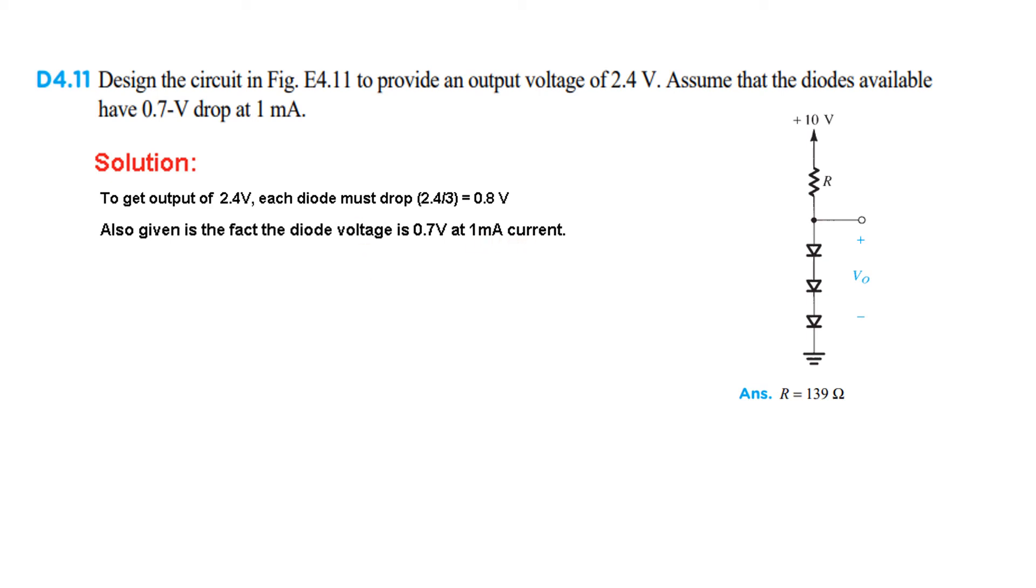The circuit requirement is that the diode has 0.8 volt drop. From the characteristics, each diode at 0.7 volt has a current of 1 milliampere. In the first one, we have V1 equals 0.7 volt and current 1 milliampere from the characteristics. In the second one, we have V2 equals 0.8 volt and current I2, which we need to find.